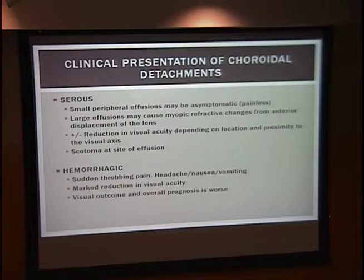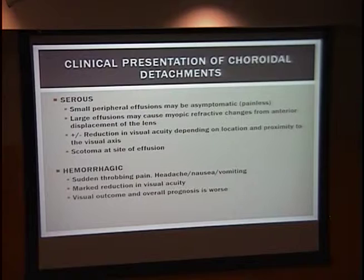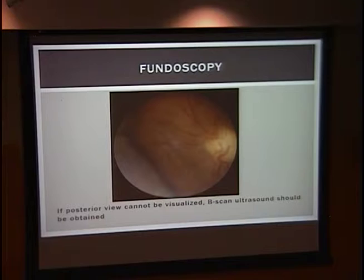Choroidal detachment can be either serous or hemorrhagic, and they present somewhat differently. Serous effusions can be asymptomatic or painless if small or peripheral. Larger effusions can cause a myopic shift due to anterior displacement of the lens, a reduction in visual acuity depending on location and proximity to the visual axis, and possibly a scotoma. Suprachoroidal hemorrhage characteristically presents with sudden throbbing pain, headache, nausea, vomiting, and marked reduction in visual acuity.